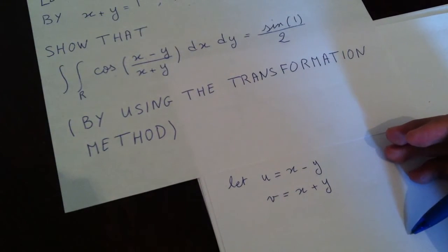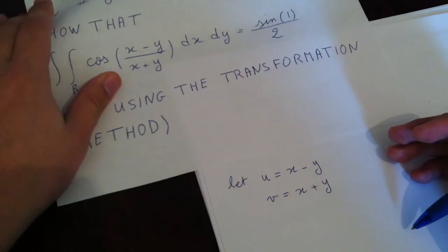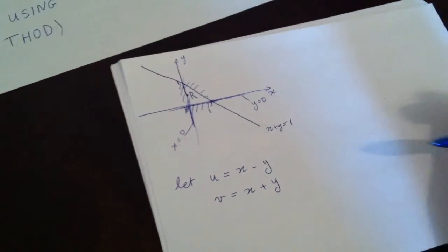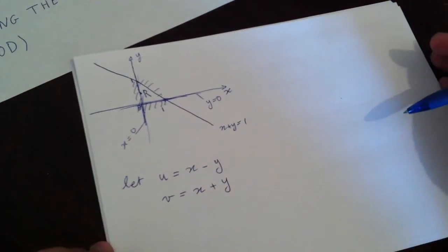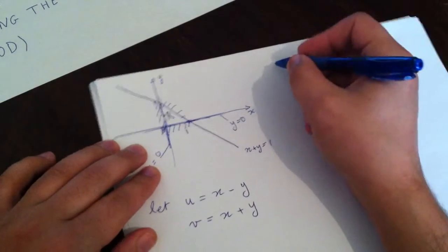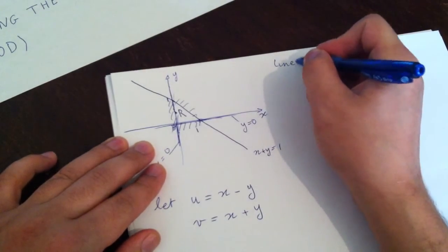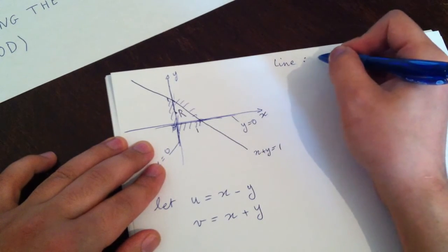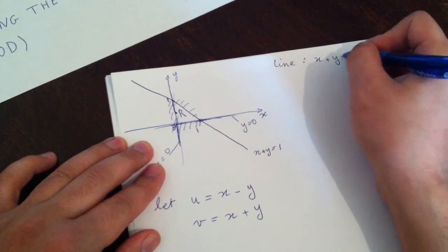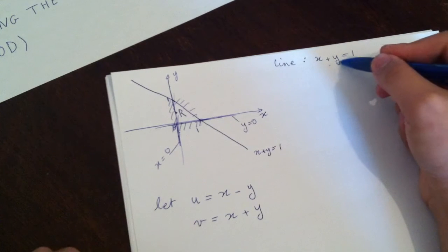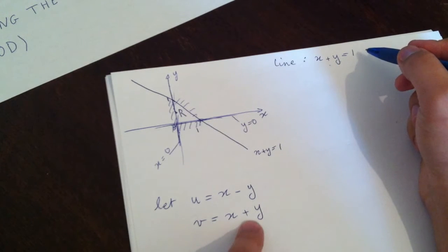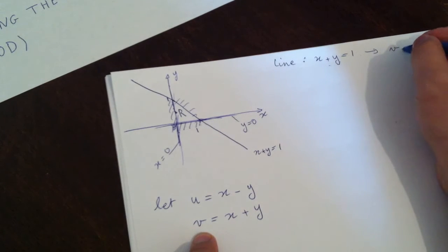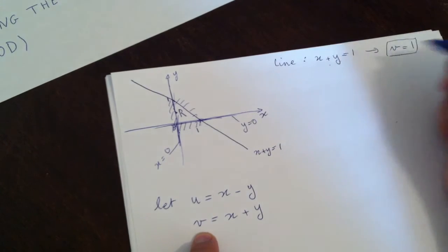Now we have to draw the transformed region RT. To draw it, we'll use the boundaries we know. From the line x plus y equals 1, since x plus y equals v, we get the boundary v equals 1. That is the first boundary.